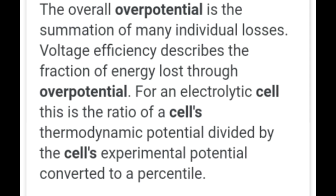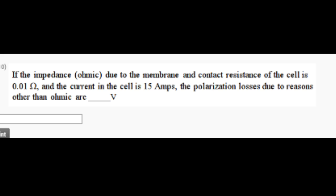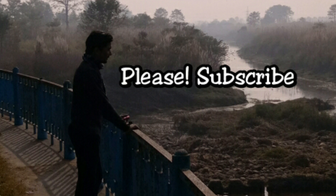Question 10: If the impedance ohmic due to membrane and contact resistance of the cell is 0.01 ohm and the current is 15 ampere, the polarization losses due to reasons other than ohmic are... For this question you have to wait because the answer is delayed. Please keep visiting the comment box before the last date of submission. This was all regarding Assignment 11. Thanks for watching. Only one assignment is remaining, so be prepared for the examination being held on June 2nd, 2019. Best wishes from my side, thank you very much.